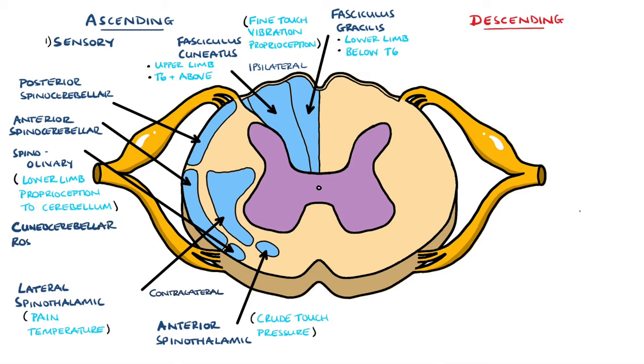In addition to these pathways, there are the cuneocerebellar and rostral spinocerebellar tracts that exist more superiorly. These carry the proprioceptive signals of the upper limbs and neck back to the cerebellum.